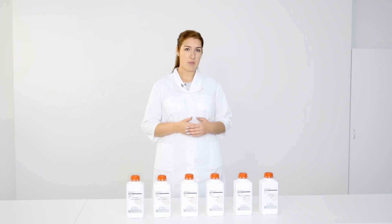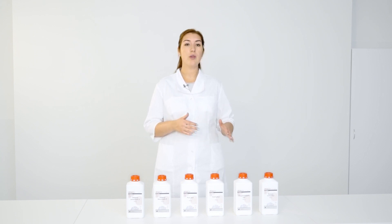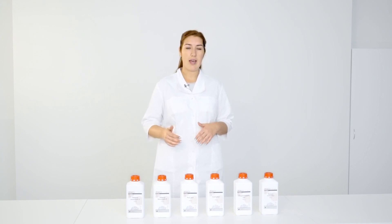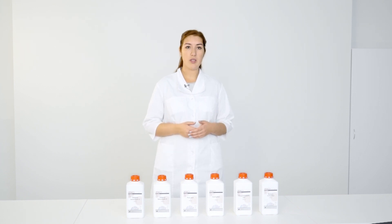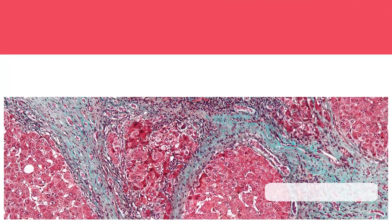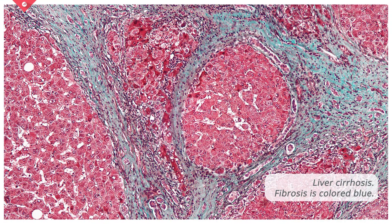In addition, liver biopsies may have fine collagen fibers between the liver cells, and the amount of collagen may be estimated based on the staining method. It helps in identifying increases in collagenous tissue, for example fibrotic changes such as liver cirrhosis, and also to distinguish tumors arising from muscle cells and fibroblasts.